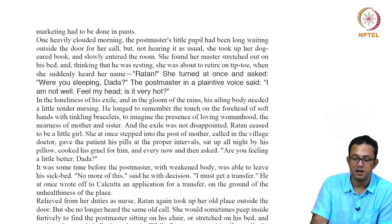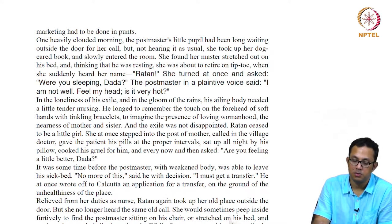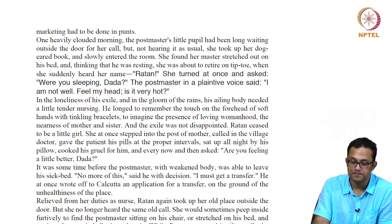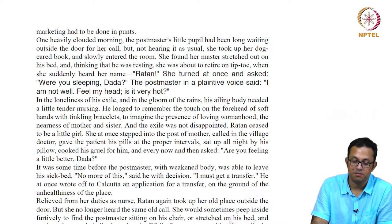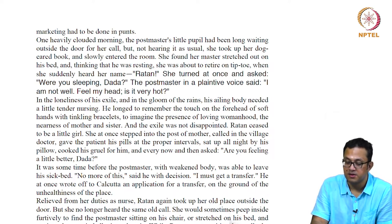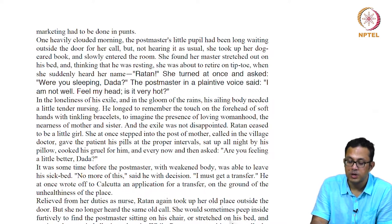The village roads were not really pukka roads — not cemented or metalled as described at the beginning of the story. When monsoon came they became completely ruinous and impassable. One heavily clouded morning, the postmaster's little pupil had been long waiting outside the door for her call, but not hearing it as usual she took up her dog-eared book and slowly entered the room. She found the master stretched out on his bed.